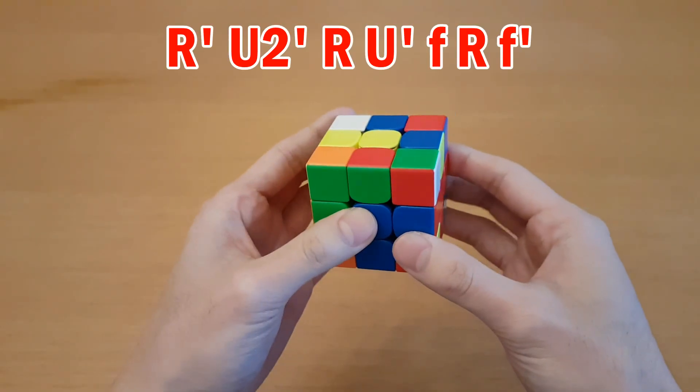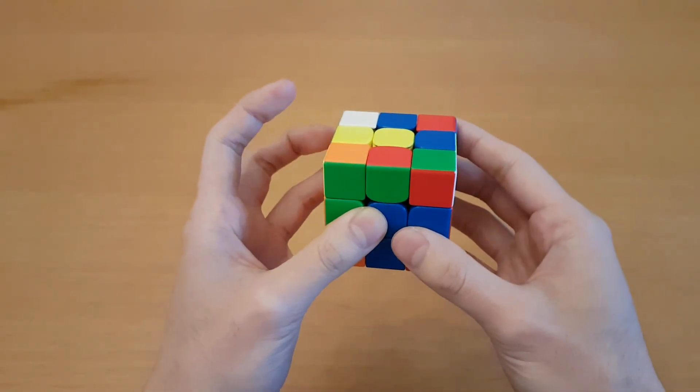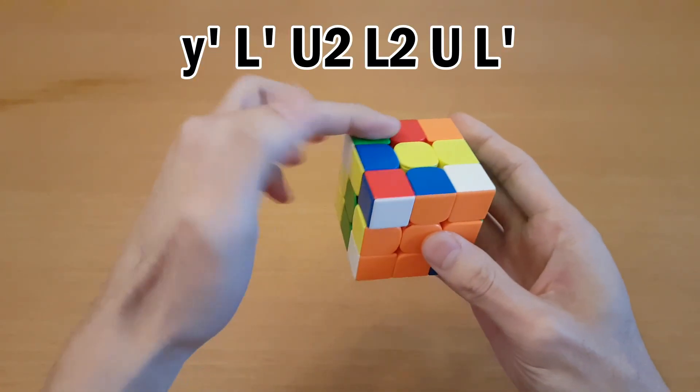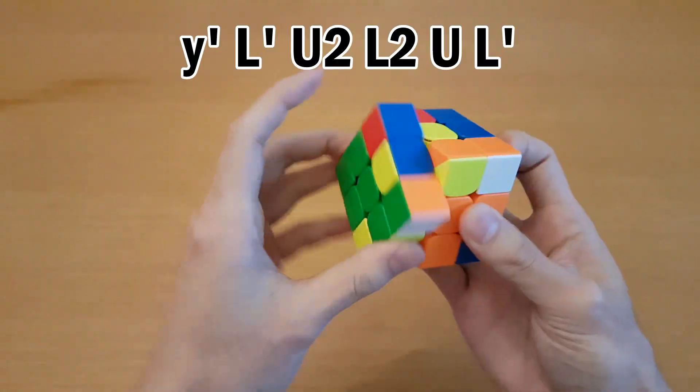This one's a bit more debatable. You could set them up like this and then insert rotationless, but I think if this slot is unsolved, then you should rotate and do this one instead since this is just much faster.